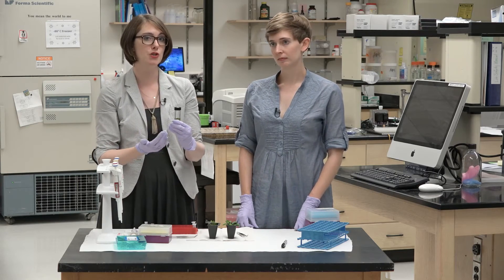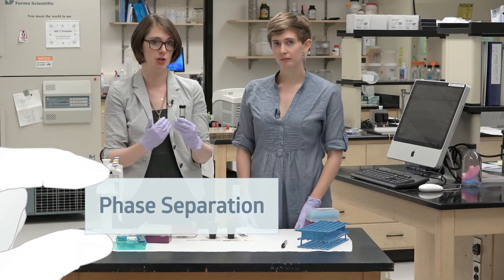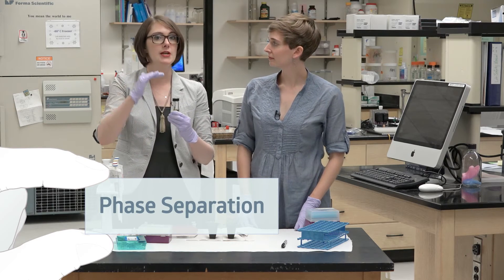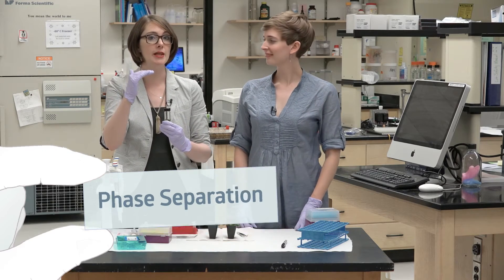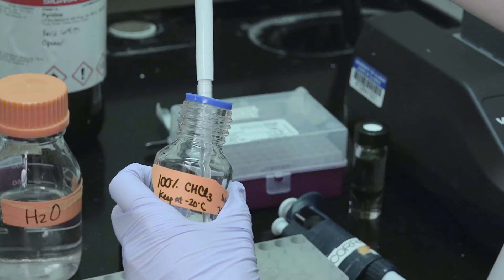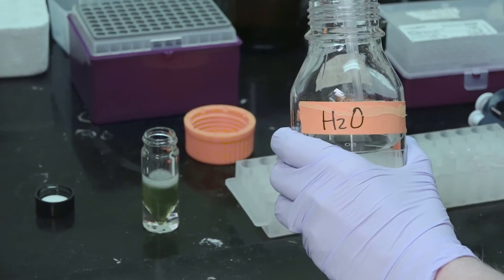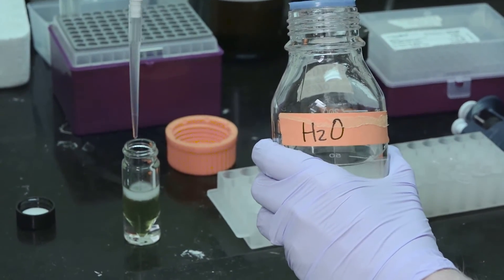But this is all of the metabolites that are in that sample and we're really interested in the amino acids. So we can take it a step further and do what's called a phase separation so that we can separate out different kinds of metabolites based on their chemistry. We're going to add chloroform and water to our sample and methanol. And we're doing that in the hood because chloroform will make you pass out.